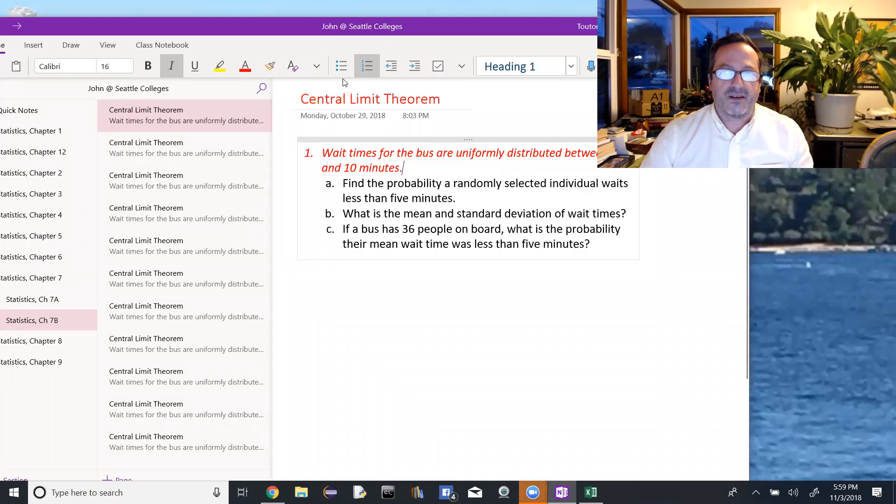Okay, so we're going to look at another central limit theorem example. It says wait times for the bus are uniformly distributed between 2 and 10 minutes.